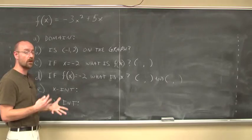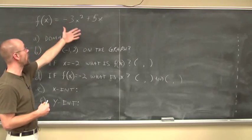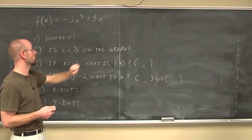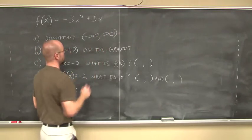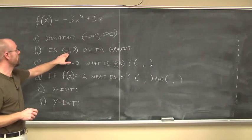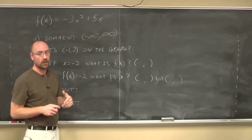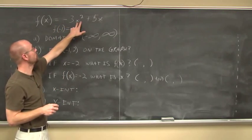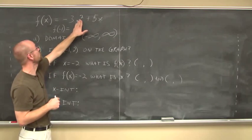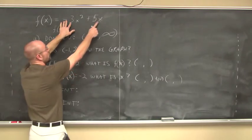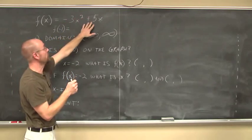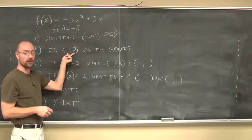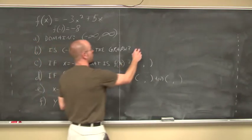The first thing we want to do is find the domain. Recalling domain restrictions from the previous section: are there any radicals of even index, or any x's in denominators? In this case there aren't any of those restrictions, so the domain is all real numbers, negative infinity to positive infinity. It asks: is the point negative 1 comma [some coordinate] on the graph? We can find out by plugging in negative 1. Negative 1 squared is positive 1; positive 1 times negative 3 is negative 3. Negative 1 times 5 is negative 5. Negative 3 plus negative 5 is negative 8. So f of negative 1 equals negative 8 — that is not what this coordinate says, so this point is not on the graph.